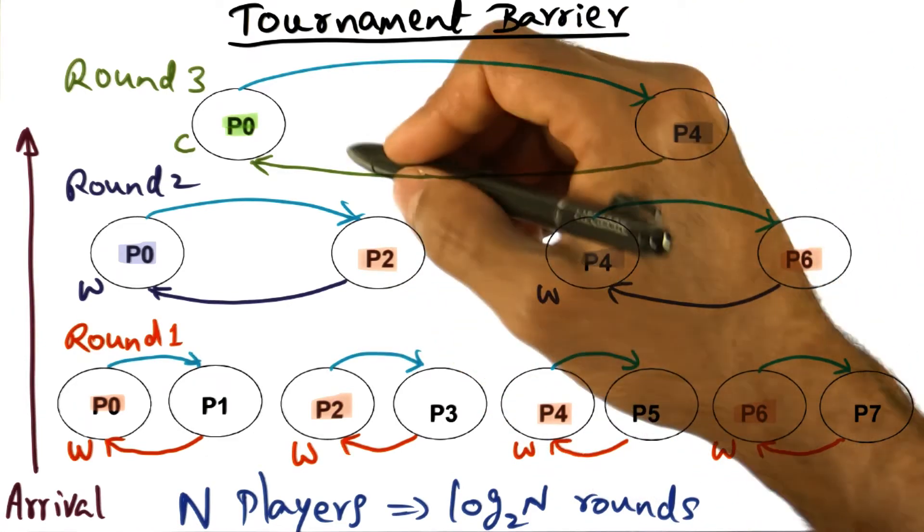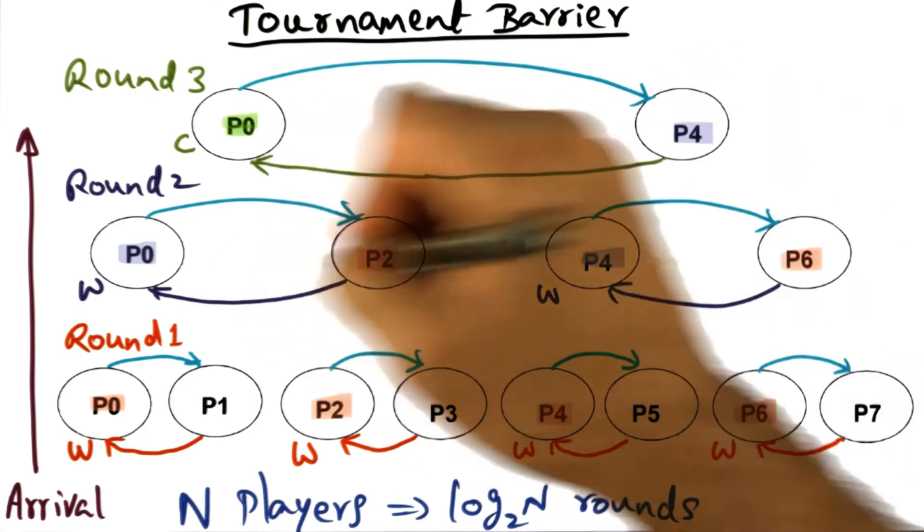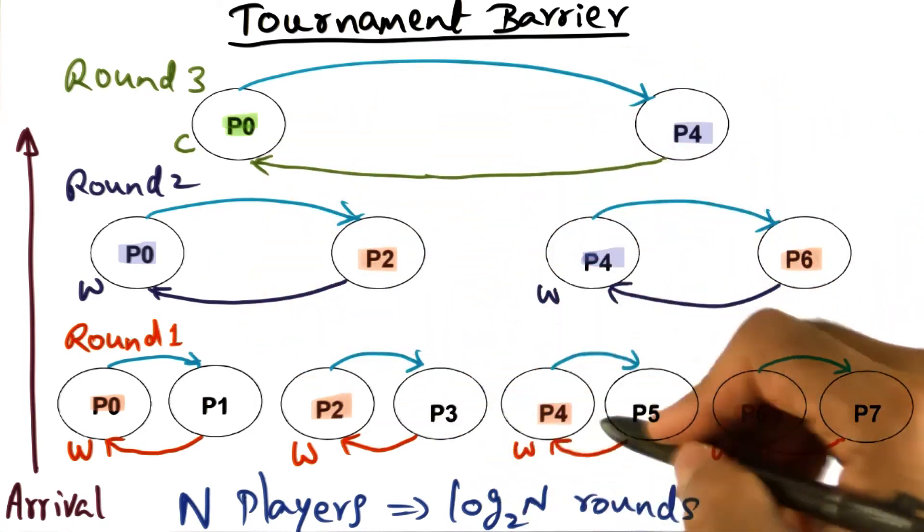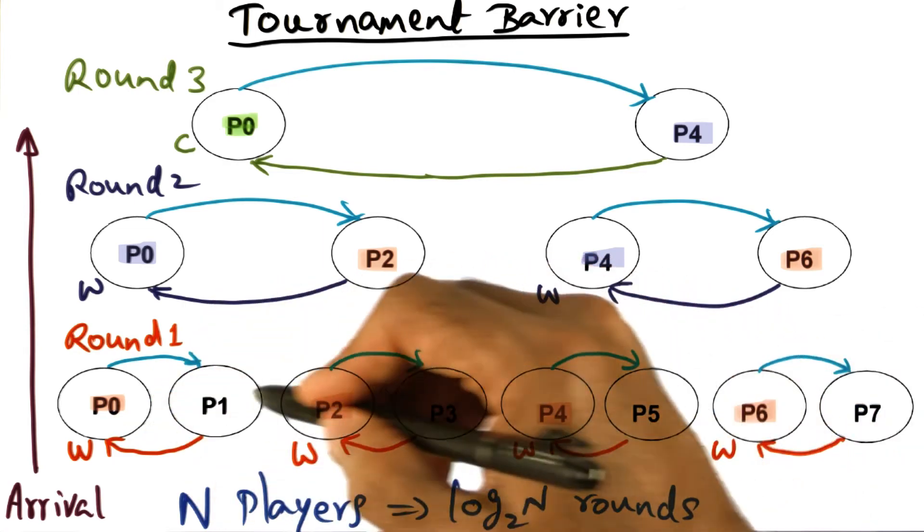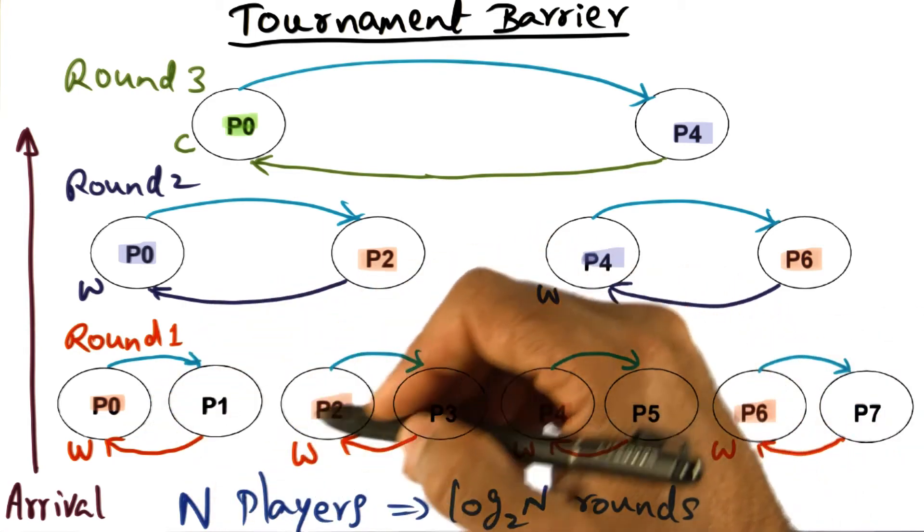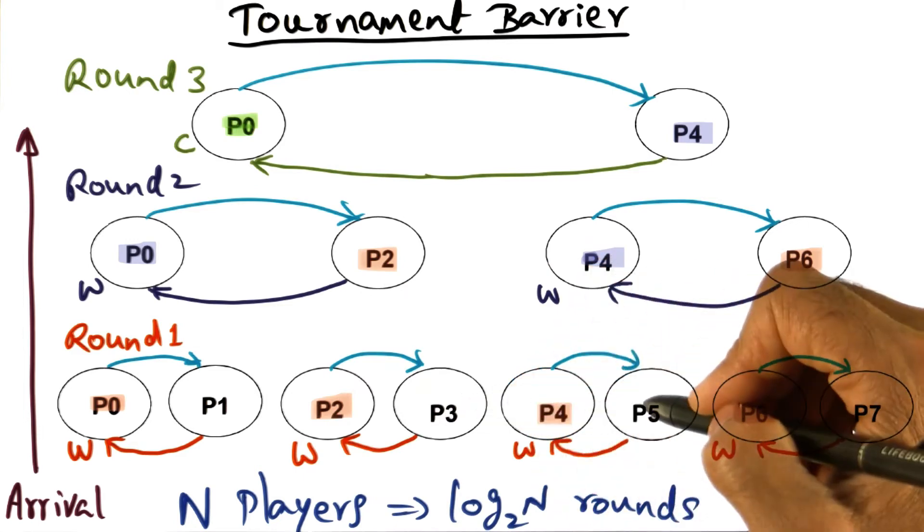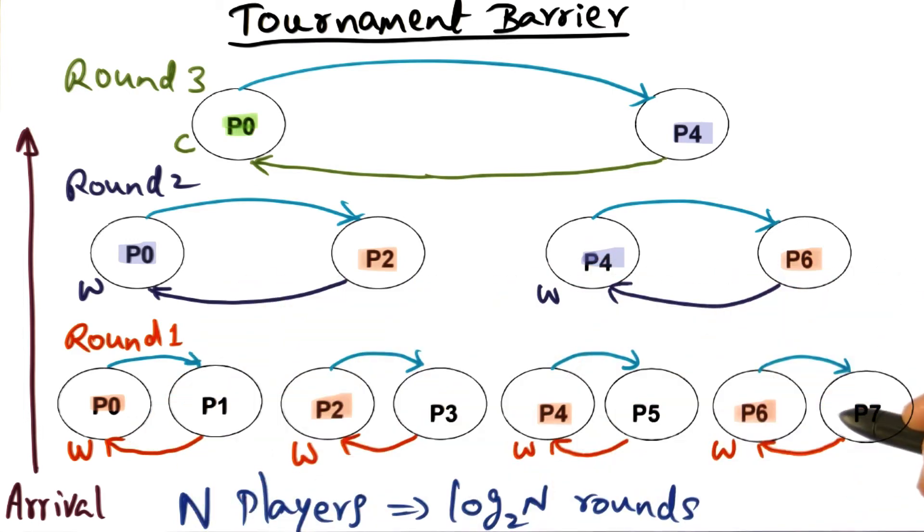So this process of waking up the losers at every level goes on till we reach round one. And when at round one, all the winners have shook hands with the respective losers at the first round. At that point, the wake up is complete. Everybody is awake now, and the barrier is done. So all are awake, and the barrier is done, and they can move on to the next phase of the computation.